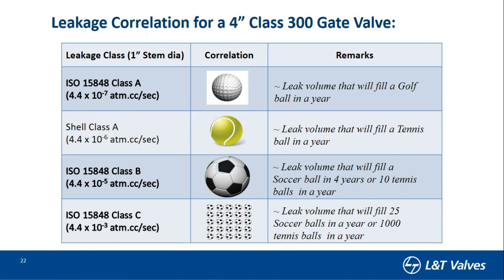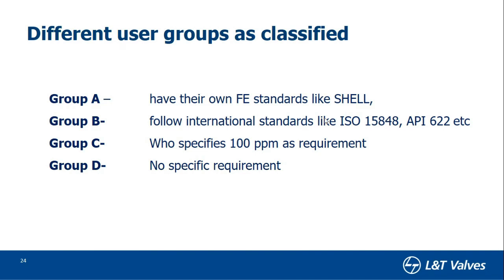There are different groups of customers. Group A customers have their own standards — like Shell, ExxonMobil. Group B customers follow international standards like ISO 15848 or API 624. Some customers specify a direct PPM requirement, like 100 ppm — California State requires all valves entering the state to be certified to 100 ppm. And there are customers who don't have any such emission requirements at all.